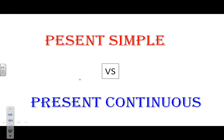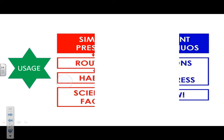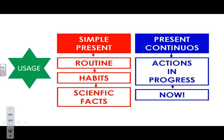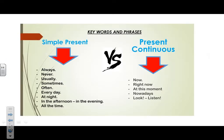The Present Simple versus the Present Continuous. The usage: when do we use them? We use the Present Simple when we talk about daily routines, habits, or scientific facts. The other one, the Present Continuous, we use when we talk about actions in progress — something happening now, at the moment.